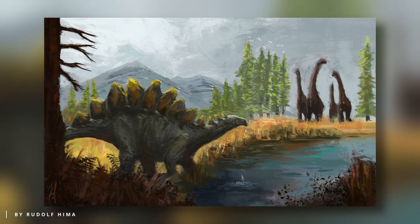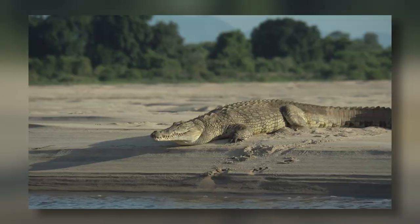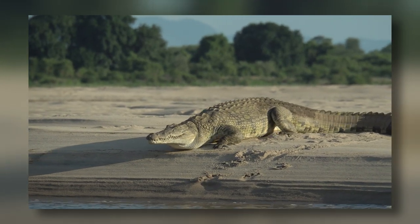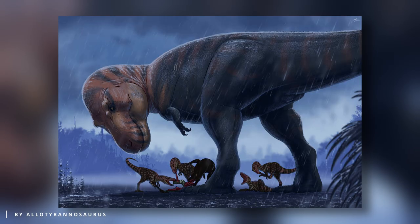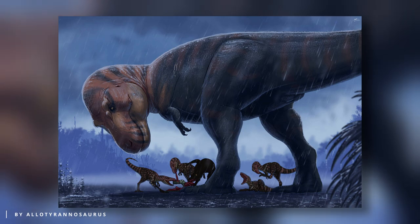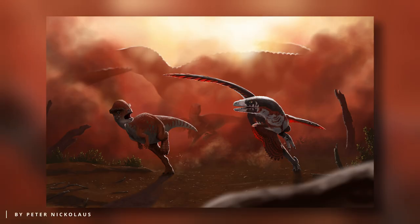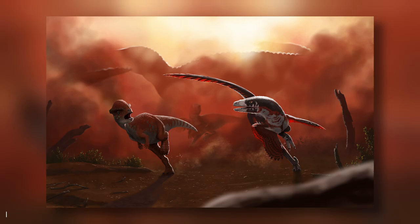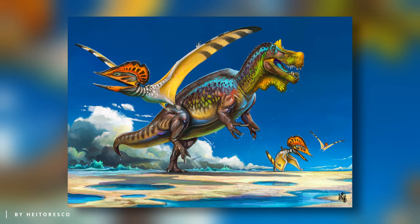The triumph of dinosaurs, however, wasn't solely due to the extinction of other groups. Unlike lizards or crocodiles, whose legs run parallel to the ground, all dinosaurs had their legs positioned beneath their bodies, resulting in an upright stance. This unique anatomical feature, absent in any other reptile, allowed for more efficient energy conservation during movement. Now that we've briefly clarified what a dinosaur is, let's move on to the first and most common example of a prehistoric animal being mistakenly labeled as a dinosaur.